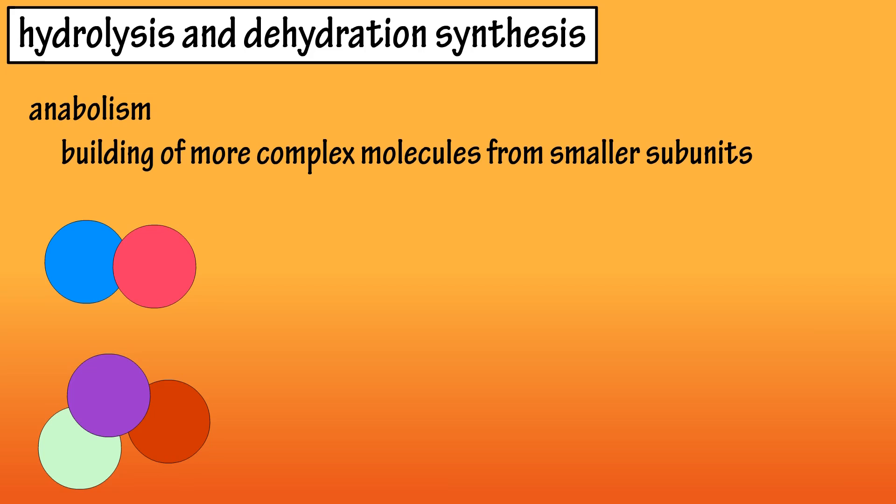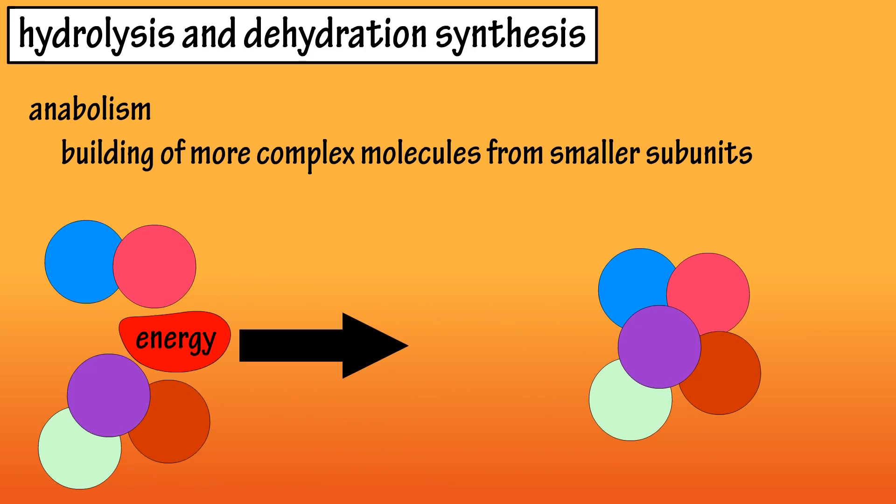Anabolism describes the many chemical reactions that take place to build larger, more complex molecules from smaller subunits. These reactions require energy, which often comes from the breakdown of ATP. One of the important types of anabolic reactions is called dehydration synthesis.